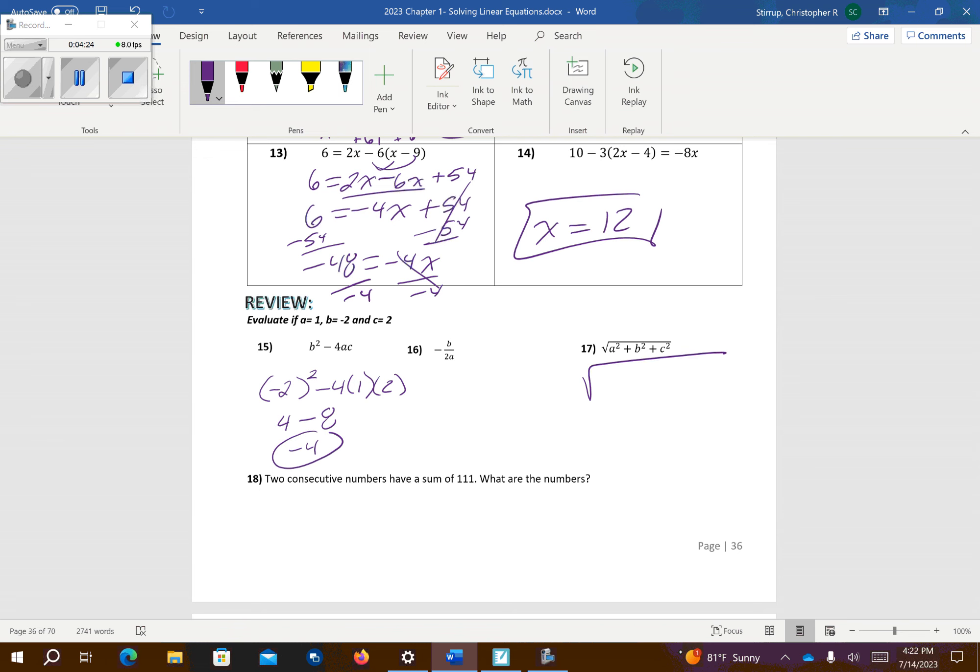Number 17. I have the big square root. My a value is 1, so I have 1 squared. My b value is negative 2. And my c value is 2. And I just keep it consistent. I put the 1 in parentheses as well. 1 squared is 1. Negative 2 squared is 4. 2 squared is 4. Add those up, so I get square root of 9. And the square root of 9 is 3. And that's all we have.